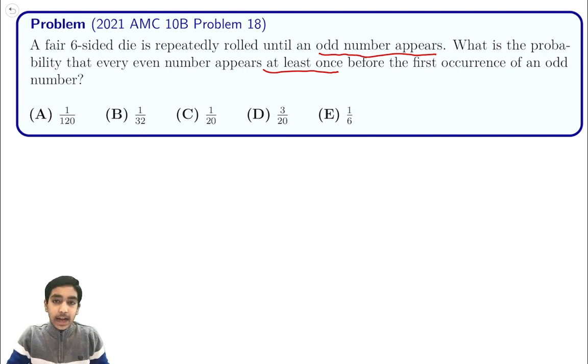So how can we do this? Well, here's the idea. This is something called conditional probability. Basically we want to find the probability that we roll a unique even number and the probability we roll an odd number.